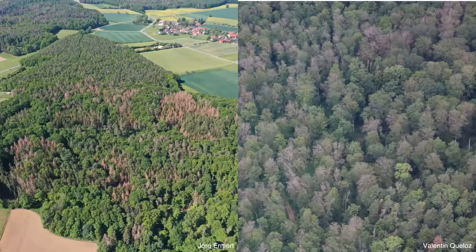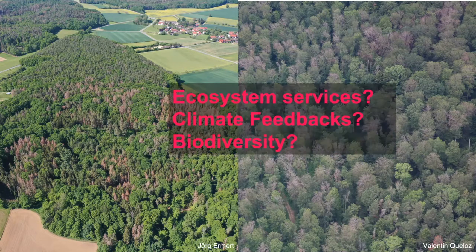But if forests are increasingly showing patchy, diffused tree mortality, we have to ask ourselves: how will this affect ecosystem services? Will forests contribute to climate change via climate feedbacks by releasing carbon to the atmosphere? And how will this affect biodiversity? As some tree species are more vulnerable than others during extreme drought and heat events, this can have profound effects on whole ecosystem dynamics.